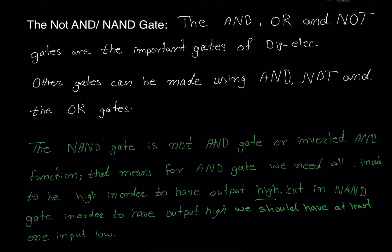Hello guys, welcome back to Tutoring with Abdul. In today's session we'll be talking about the NOT AND gate, or the NAND gate. Earlier this week we talked about the AND gate and the OR gate. Today we'll be inverting the AND gate — the inverted AND gate is the NAND gate. In digital electronics, the AND gate, OR gates, and NOT gates are very famous and important. Other gates can be constructed using AND, OR, and NOT gates combined.